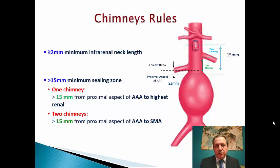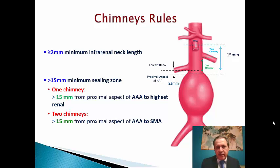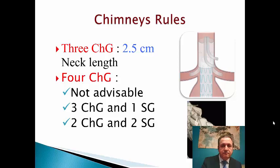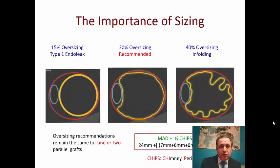What are the chimney rules? The new sealing zone should be at least 15 mm. If you use one chimney, the new sealing zone is measured from the proximal aspect of the AAA to the highest renal artery. If you use two chimneys, the new sealing zone is measured from the proximal aspect of the AAA all the way to the SMA. If you have three chimneys, you need a longer sealing zone — at least 25 mm. If you're going to use four chimneys, it's better to use a sandwich technique. Oversizing is very important: when you use a chimney, you need at least 30% oversizing.